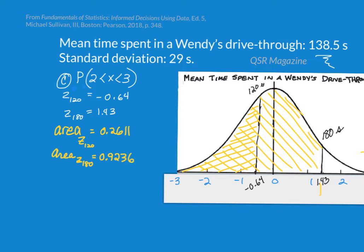But wait a minute, we're not interested in either of those areas. The area that we are interested in is here, between the two z-scores. Well, the area to the left of 180 seconds, or 1.43 as the z-score, is 0.9236. That's a larger area. And if we subtract the smaller area from it, 0.6625 is the area between the two. The area below the larger z-score minus the area below the smaller z-score gives us the area between them.